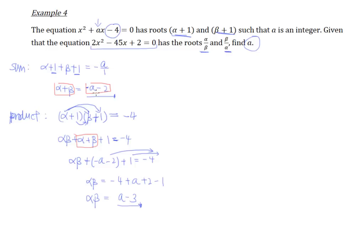So in a way, we have found out the sum of the roots, sum of α and β, and the product of αβ. Now how is this going to help us form an equation involving a and then we can solve it? I think it has very much to do with the second equation that we're given.